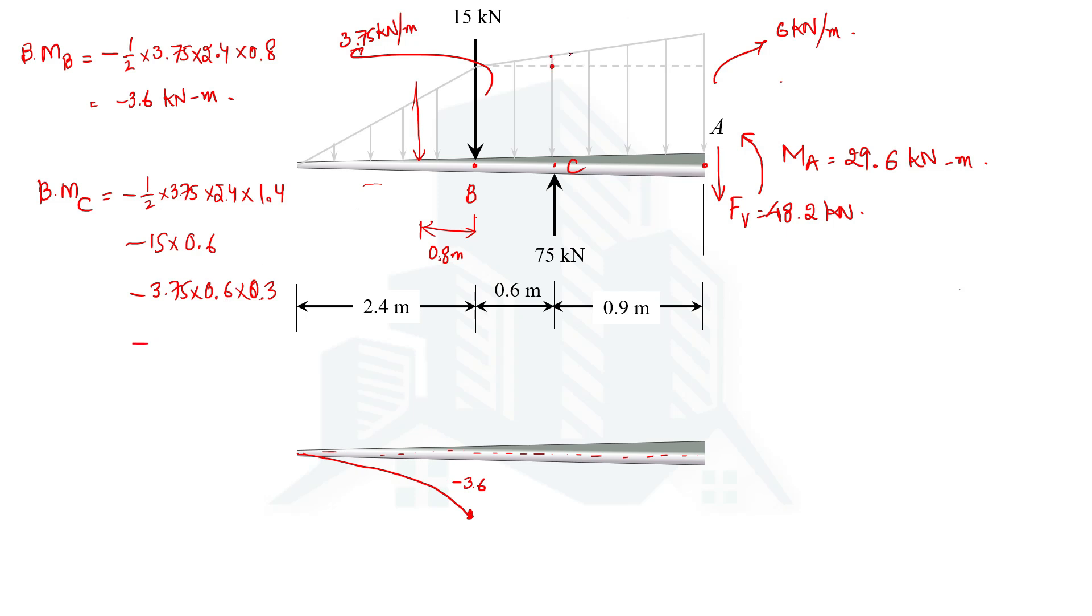But how about the triangular one? For the triangular one we need to know the intensity of the triangular load here. For that you should be using similar triangle concept. We know the intensity up to the end which is around 2.25, so this 2.25 divided by the horizontal distance which is 1.5 should be equal to this intensity of our interest. Let's say the intensity is x, so x divided by 0.6.